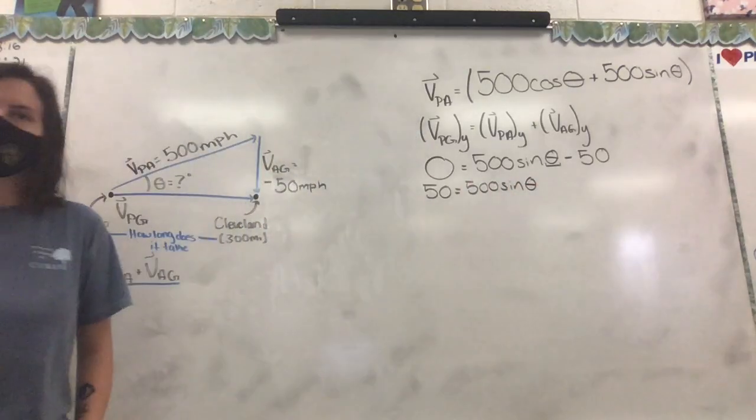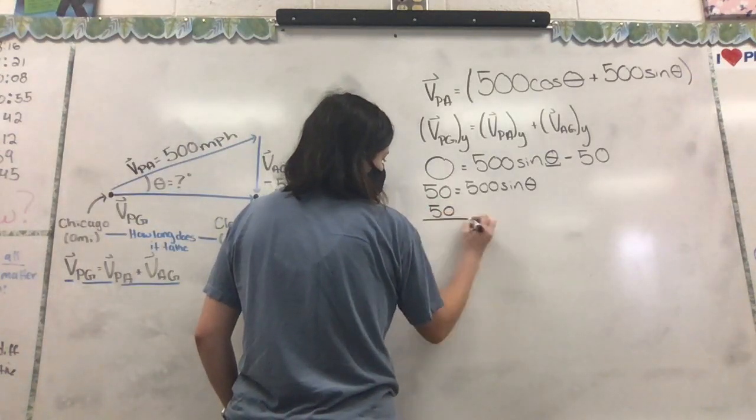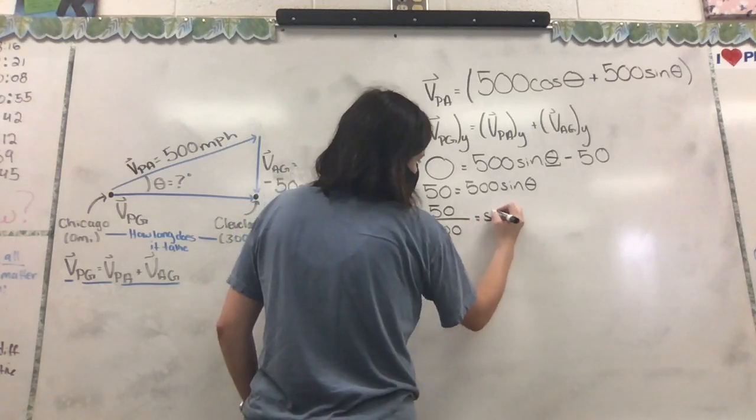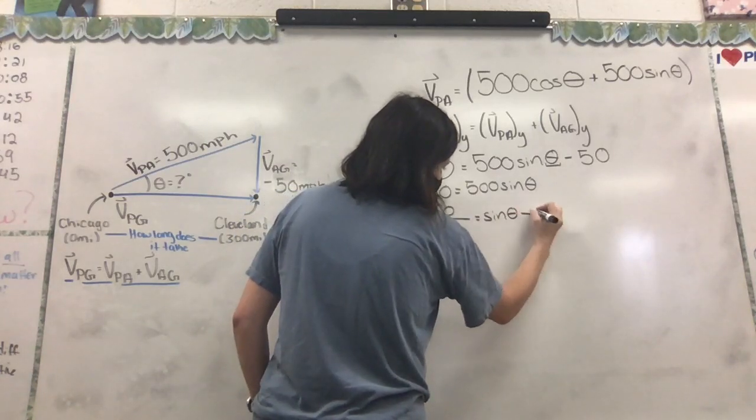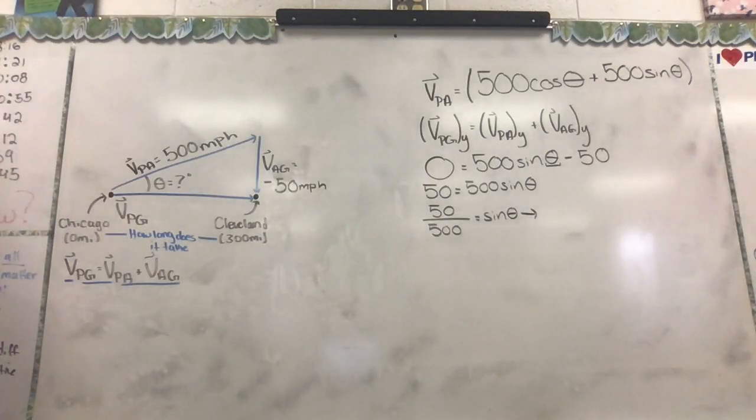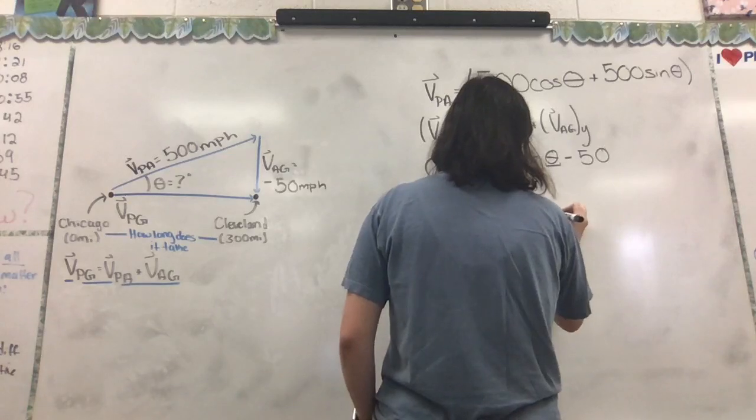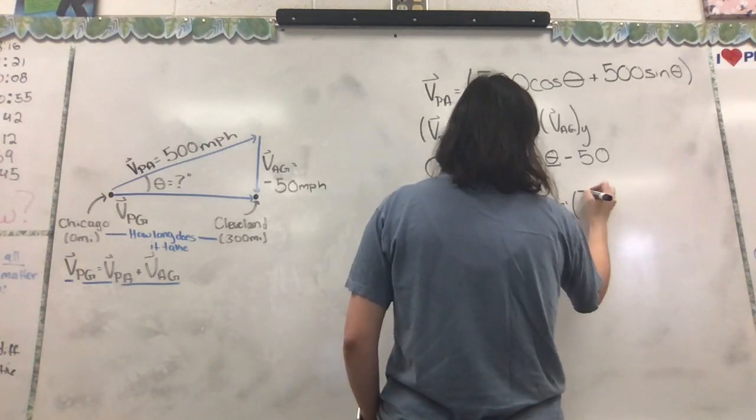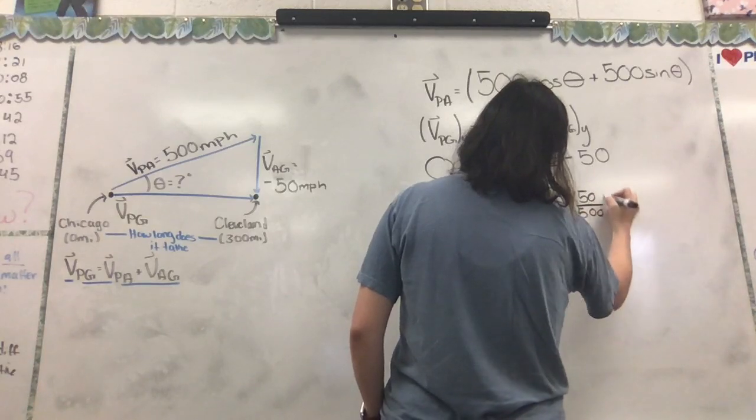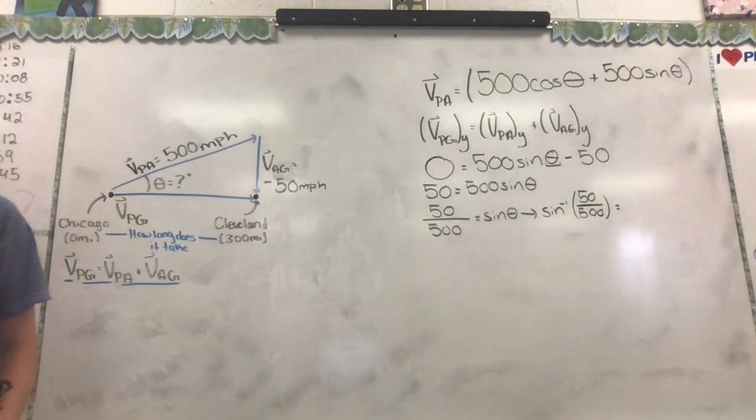Yes ma'am, we're going to divide by 500. So 50 divided by 500 equals sine of theta. What's that last thing we need to do to get theta by itself? Inverse sine. So the inverse sine of 50 over 500 will give us our angle. So does anybody have what our angle is?